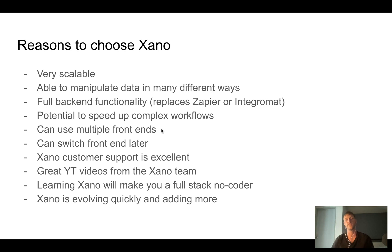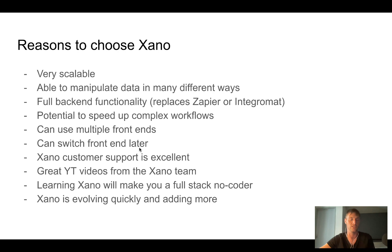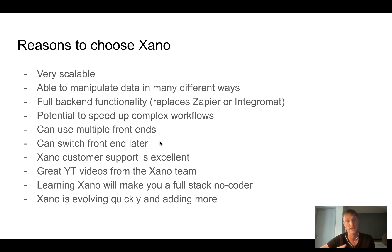Next, you can use multiple frontends. Imagine you want to use Adalo for the mobile app but Bubble for the web app — you could just have a Xano database as one source of truth. You've got your users there and they can log into either platform. And a similar point: you can switch to a different frontend later. For example, if a feature you needed wasn't available on Adalo, you could move to a different frontend and you wouldn't have to do a data migration — your data is already on Xano.